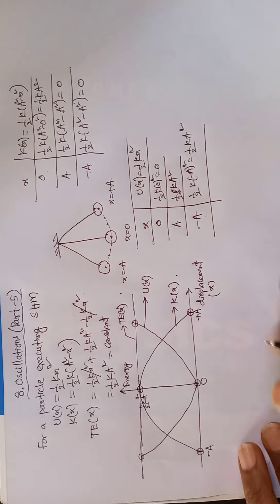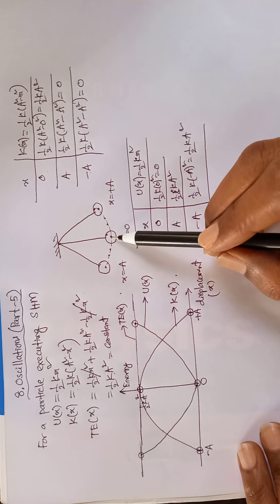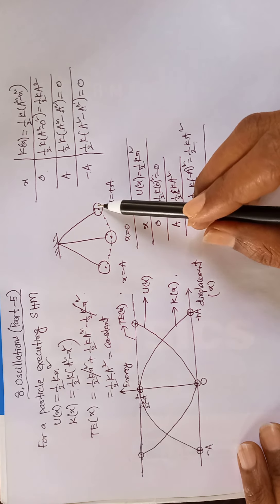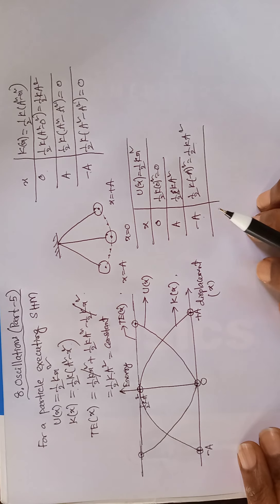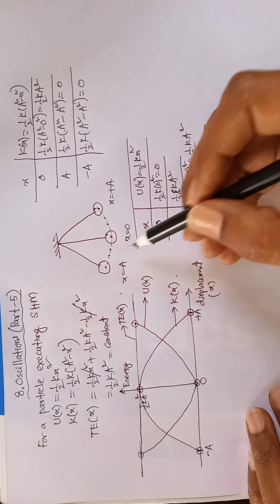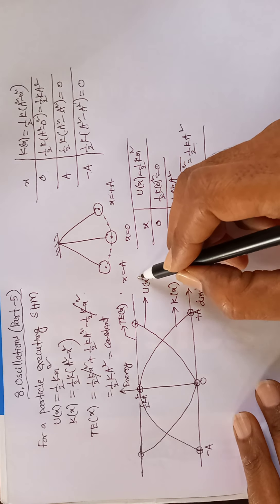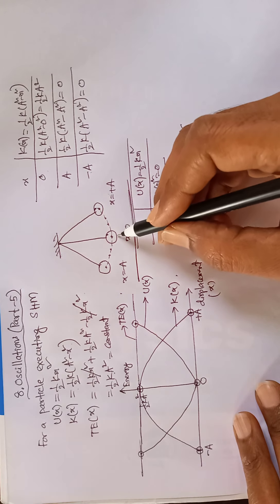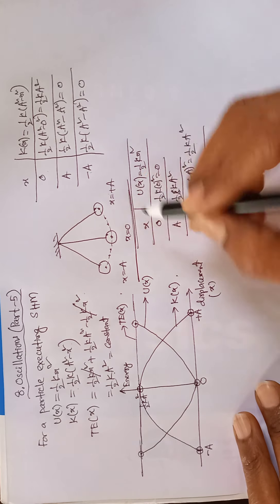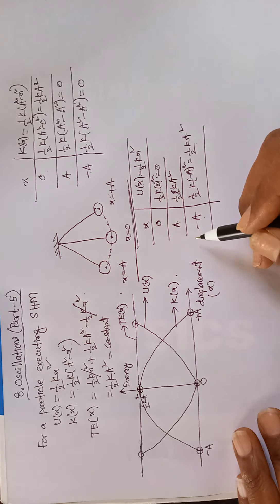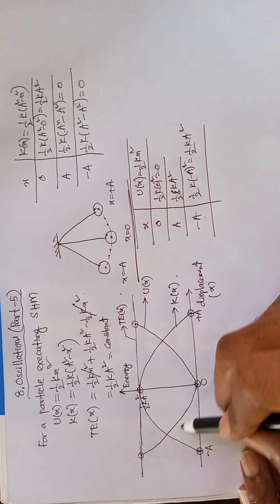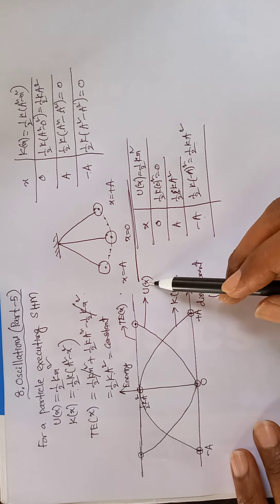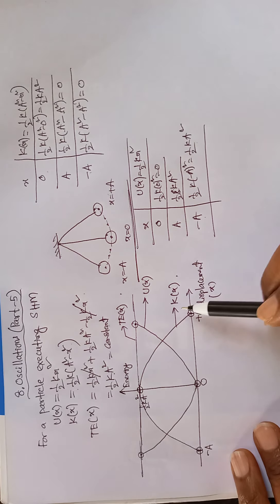Looking at the graph, we can understand its physical meaning. As the simple pendulum bob moves from the mean position to the right extreme position, the potential energy gradually increases. Generally, when height increases, potential energy increases. Here, as the bob moves from the center to the extreme, the height increases from the ground, which is why the potential energy increases. The same thing happens on the other side.